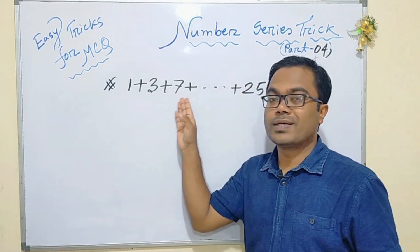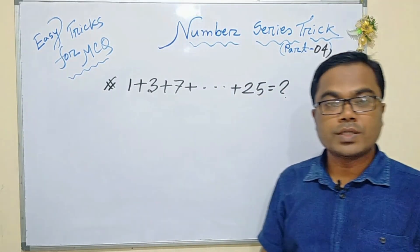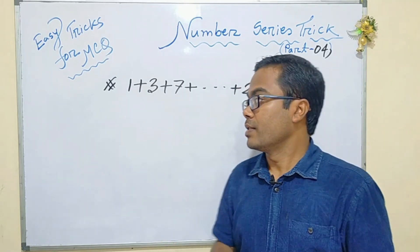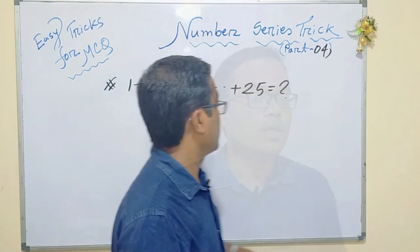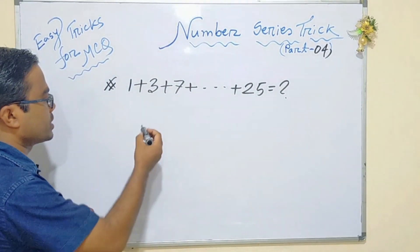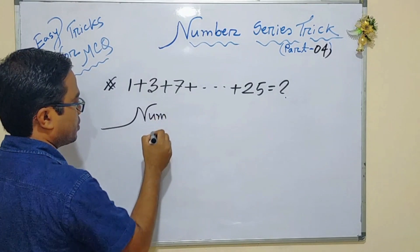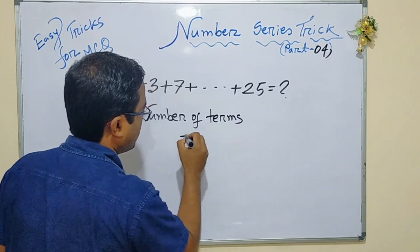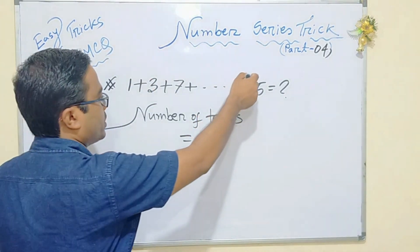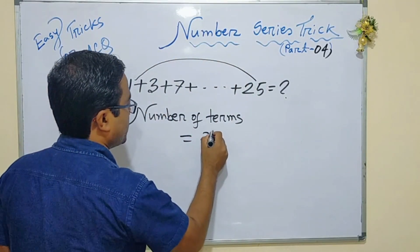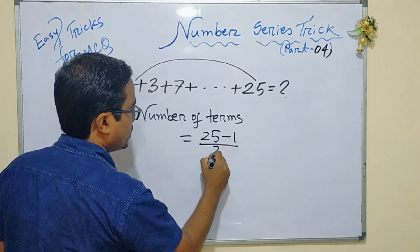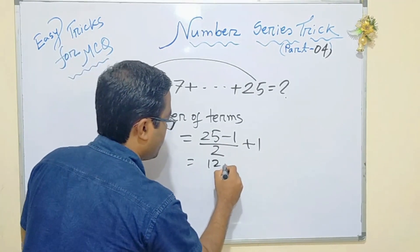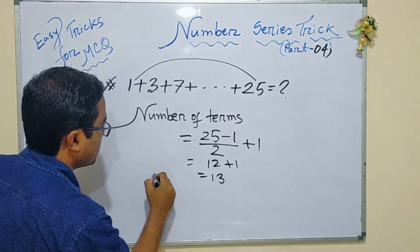Example: 1 plus 3 plus 7 plus 25. To find the number of terms, use the formula: last number minus first number divided by 2, plus 1. That is 25 minus 1 equals 24, divided by 2 equals 12, so 12 plus 1 means 13 terms.